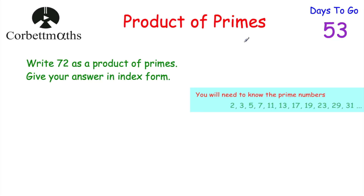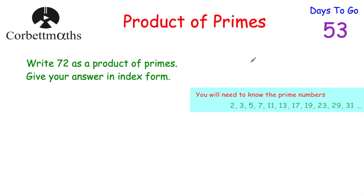Today we're going to be looking at product of primes — how to write numbers as a product of primes, as well as how to find the lowest common multiple and highest common factor using product of primes. Now every single whole number that is greater than 1, so 2, 3, 4, 5, and so on, is either a prime number, or can be written as a product of prime numbers.